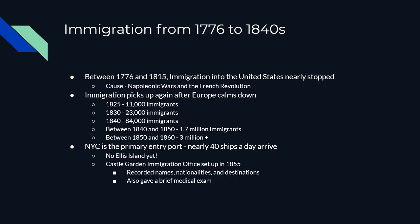Some Europeans had purchased land before leaving Europe, only to find out their purchase was a scam, leaving them stranded with no money. In 1855, the immigration office at Castle Garden was set up in Manhattan. For the first time, the names of people were recorded along with their nationalities and destination. They were given a brief medical exam and labor bureau representatives helped them find jobs.